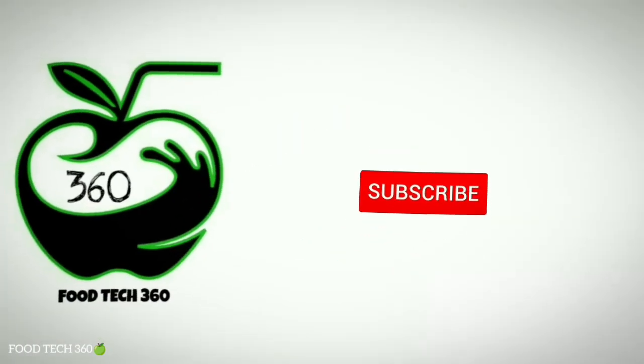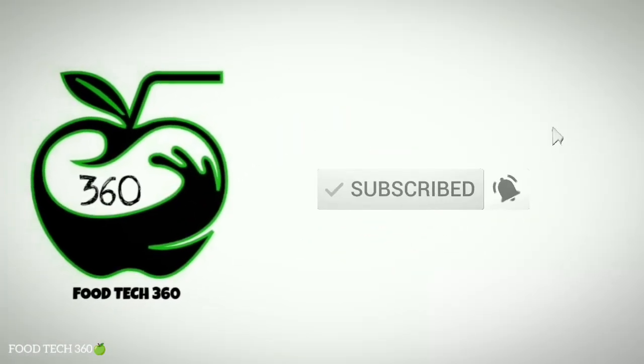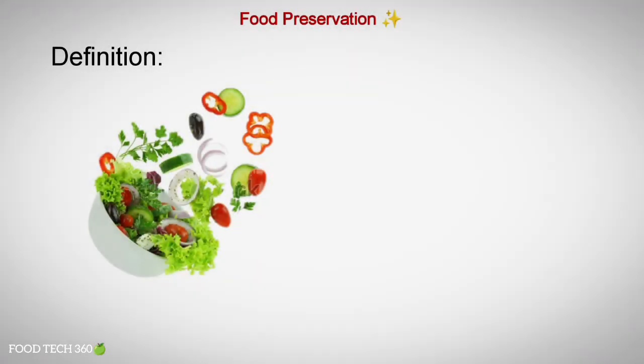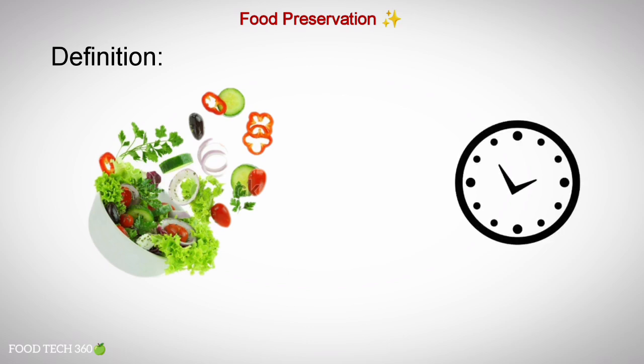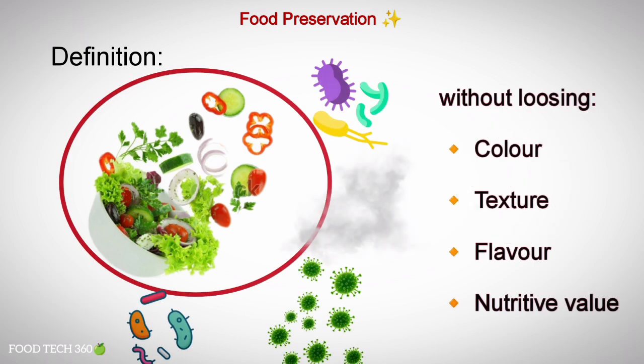Without any further delay, let's get started. Food preservation is defined as the state in which any food may be retained over a period of time without being contaminated by pathogenic organisms or chemicals, without losing optimum qualities of color, texture, flavor and nutritive value.